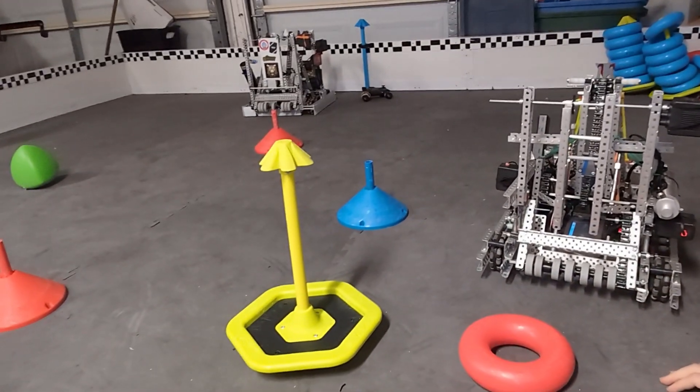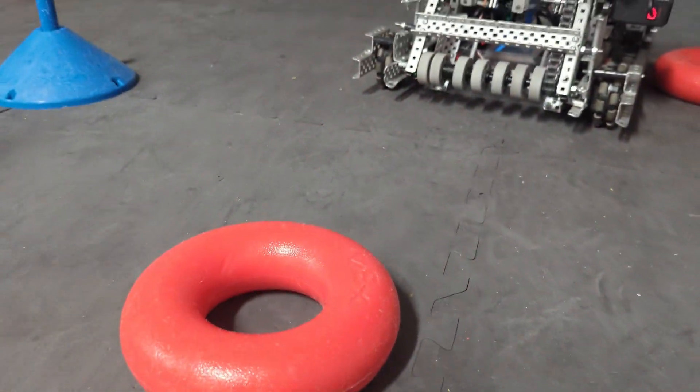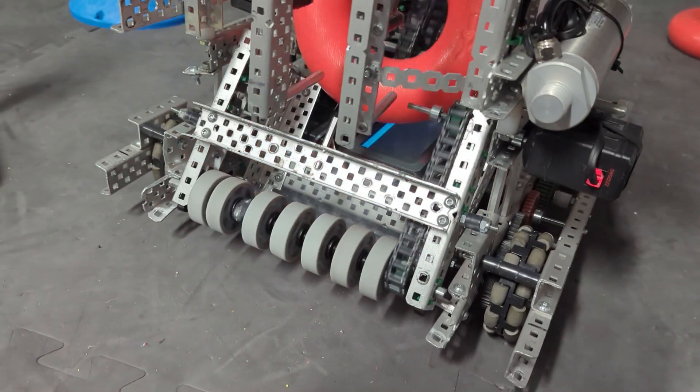The thing with touch it, own it and rolly grabbers is that when you go into the game piece with a rolly grabber and a touch it, own it mechanism, which is basically just a spinning roller, then as soon as you touch the ring, it's in your robot, it's yours, no one else can take it. That's why rolly grabbers are so much better than claws.